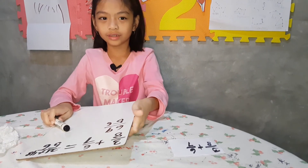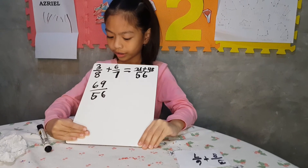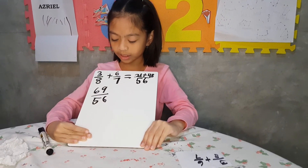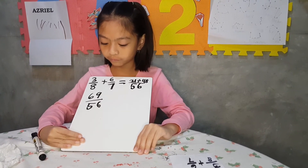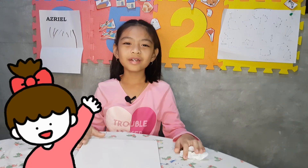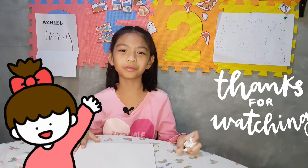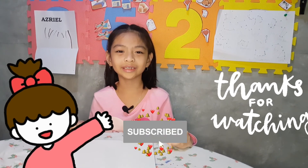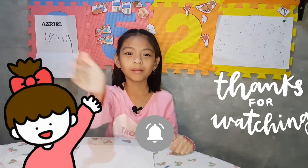So the answer of 3 over 8 plus 6 over 7 equals 69 over 56. Bye everybody! Thank you for watching this video. Don't forget to subscribe, hit the bell button, and give us a big thumbs up. Bye!